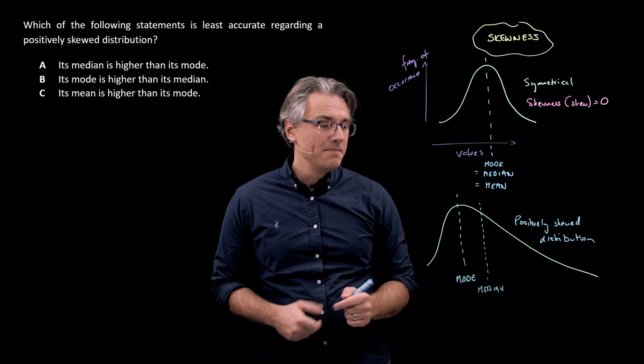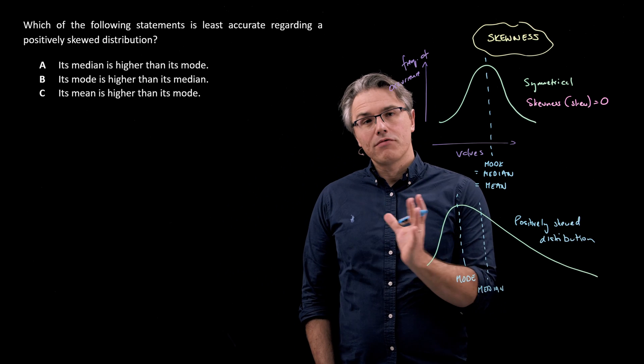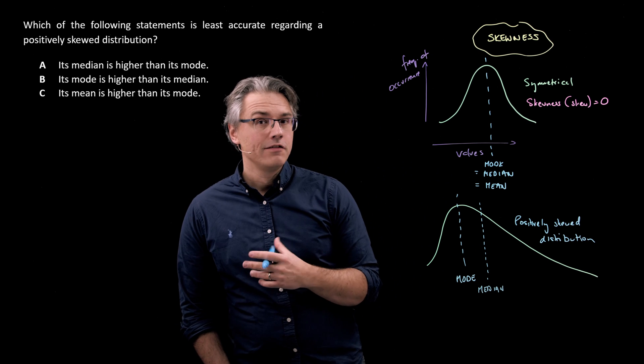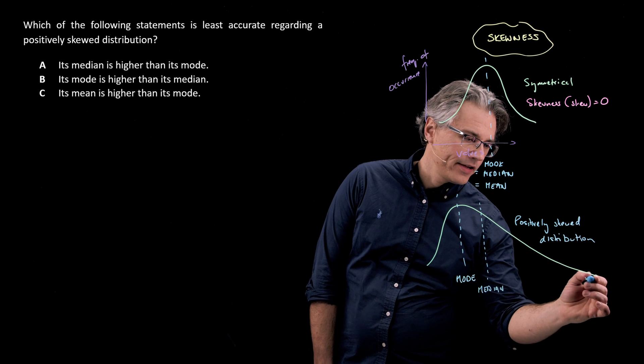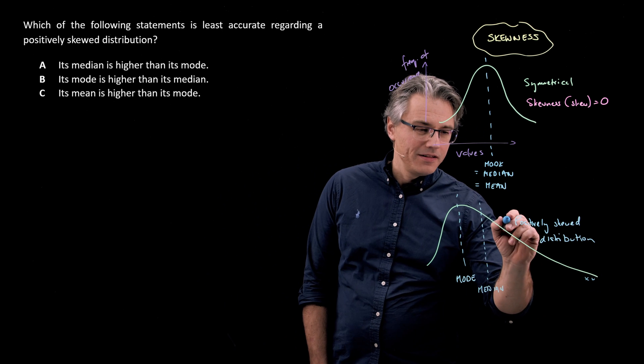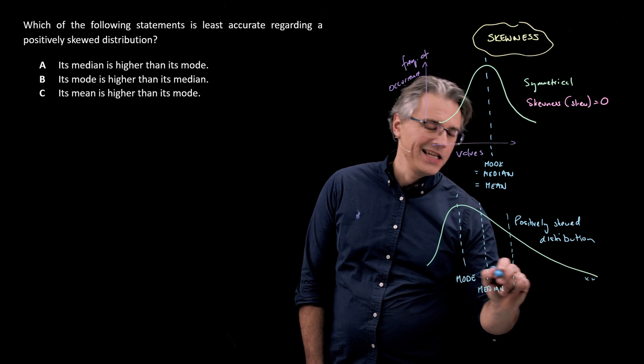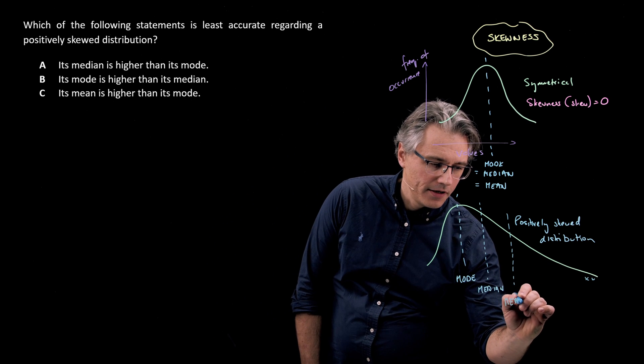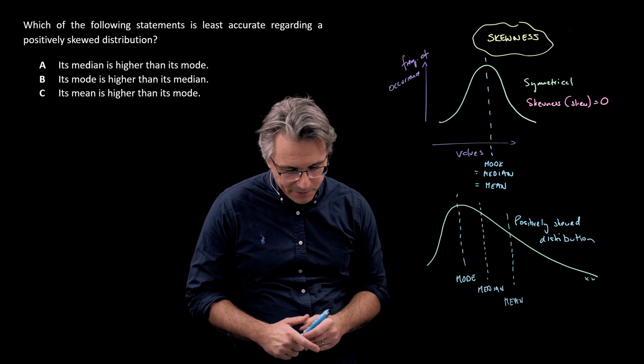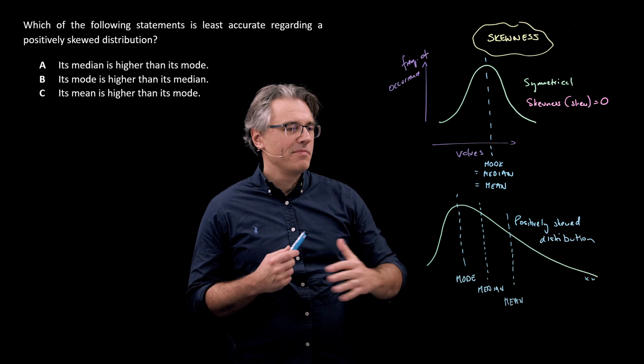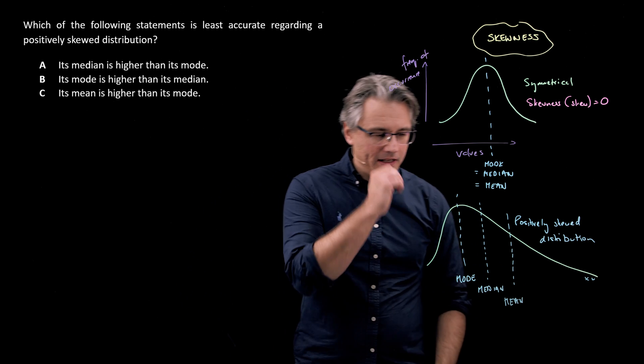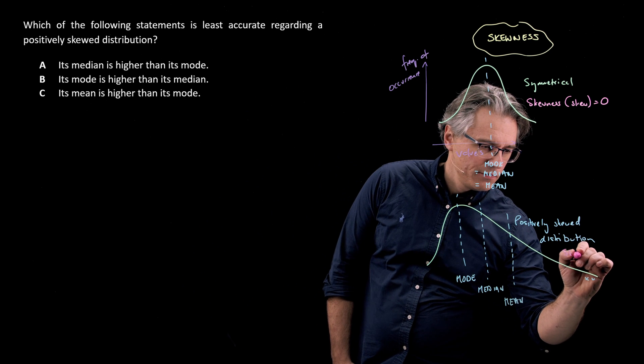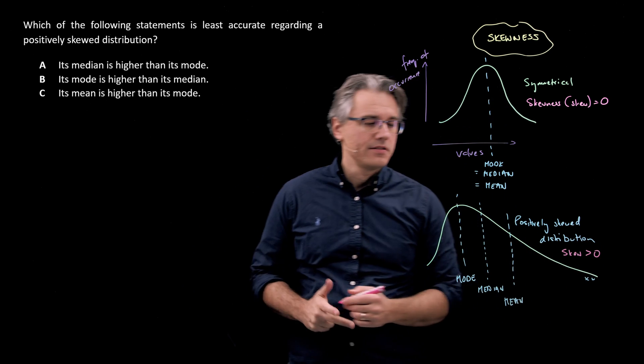And then critically, the mean - you may recall from a previous question which I did that the mean is significantly influenced by outliers, so potentially high values lying here in the tail. The mean is going to be even more to the right than the median. So mean over here. And this is extremely important that you remember this for the exam: in a positively skewed distribution, so one where the skew parameter or skewness is higher than zero...